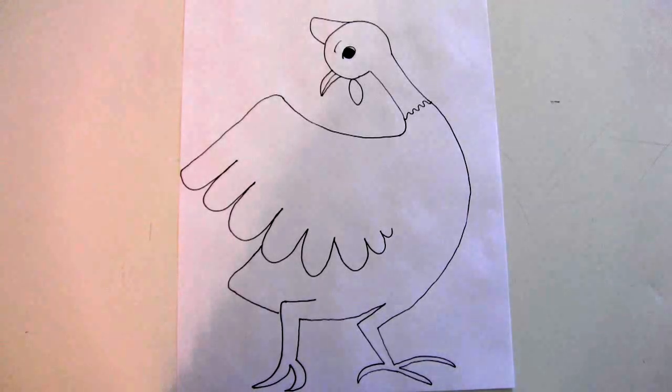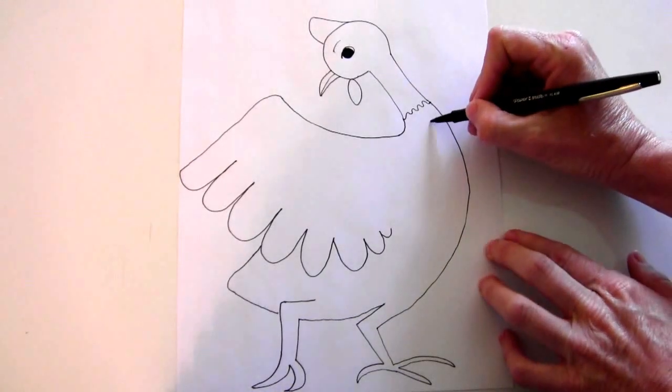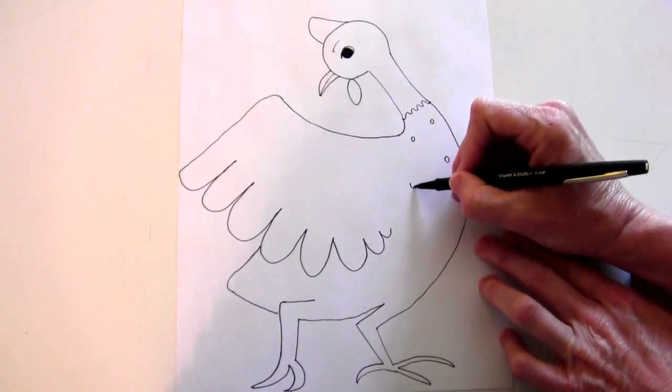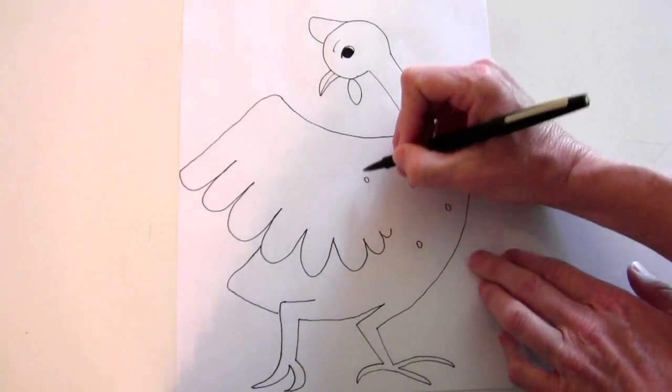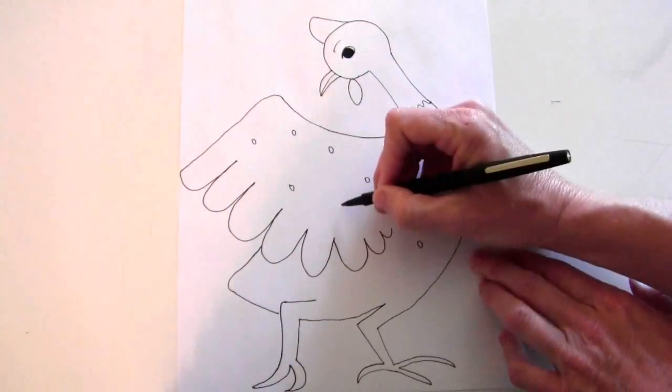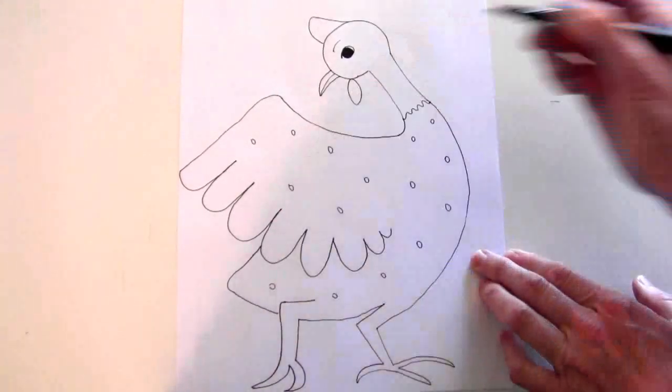Okay. And now the guinea fowl has spots. So just add a whole bunch of circles, so that when you color them, color the bird, these are white.